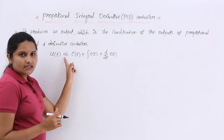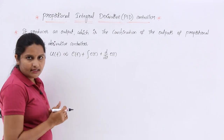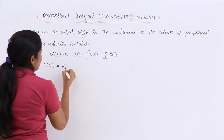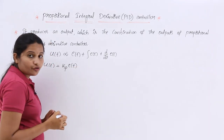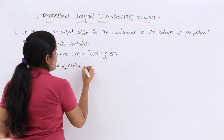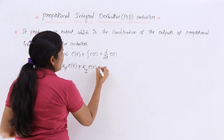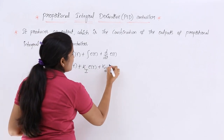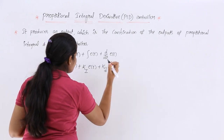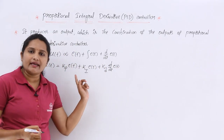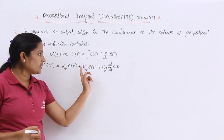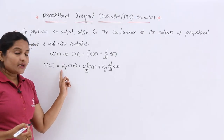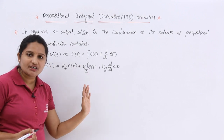To remove the proportionality, we use coefficients. So U(t) equals Kp·E(t) for the proportional part, plus Ki times the integral of E(t) for the integration part, plus Kd·(d/dt)E(t) for the differentiation part. This is the output of the PID controller: U(t) = Kp·E(t) + Ki·∫E(t) + Kd·(d/dt)E(t), where Kp is the proportionality constant, Ki is the integral constant, and Kd is the differentiation constant.